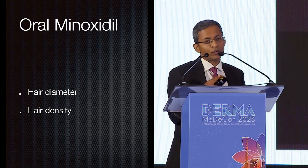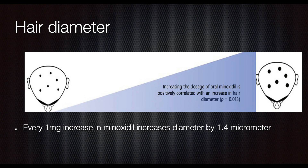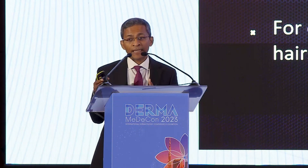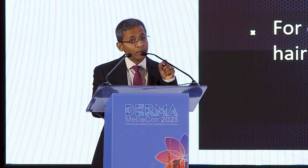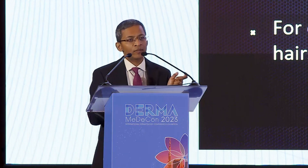Let's look at two factors: what oral minoxidil does to hair diameter and hair density. For hair diameter, for every one milligram increase in dose, hair diameter increases by 1.4 micrometers. A study showed that after 24 weeks of treatment there is much thicker hair due to this increased diameter. For hair density, every milligram increase also increases terminal hair density. The terminal hair density is the important measure, and for every one milligram there's an increase of at least nine terminal hairs per centimeter squared — which is what you see clinically as increased density and thickness.